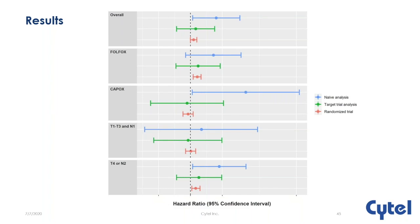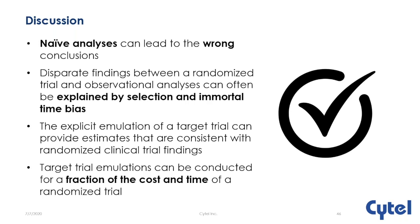The big take-home message: naive analyses often get it wrong, and it's frequently not just due to confounding. We can prevent selection bias and immortal time bias by explicitly emulating a target trial. These target trial emulations can be conducted for a fraction of the cost and time of a large randomized trial. A trial with 13,000 patients took about 10 years — it's not cheap.